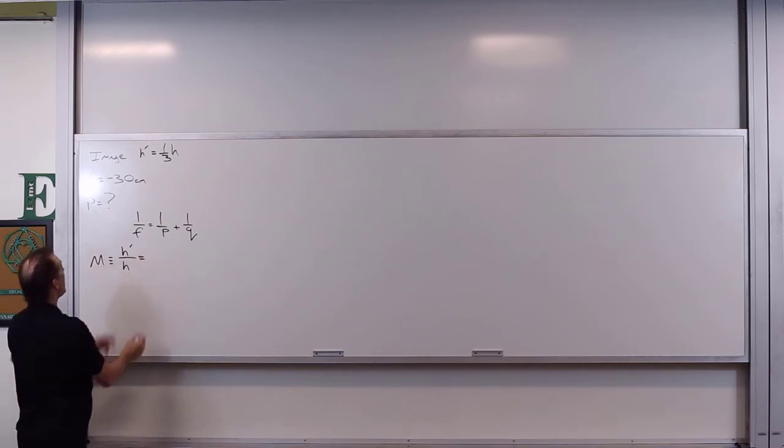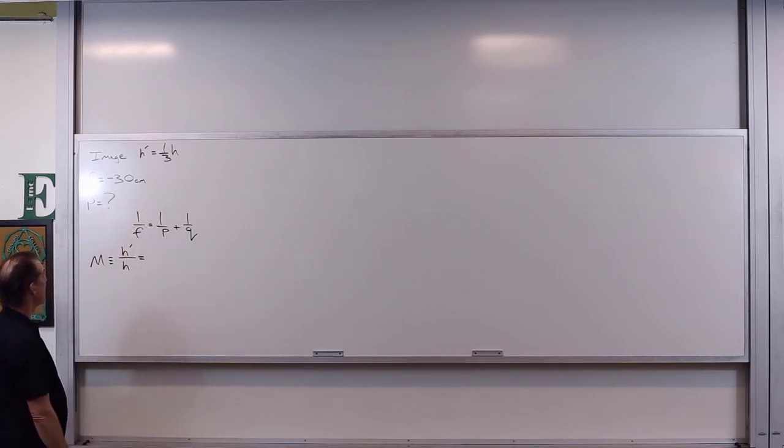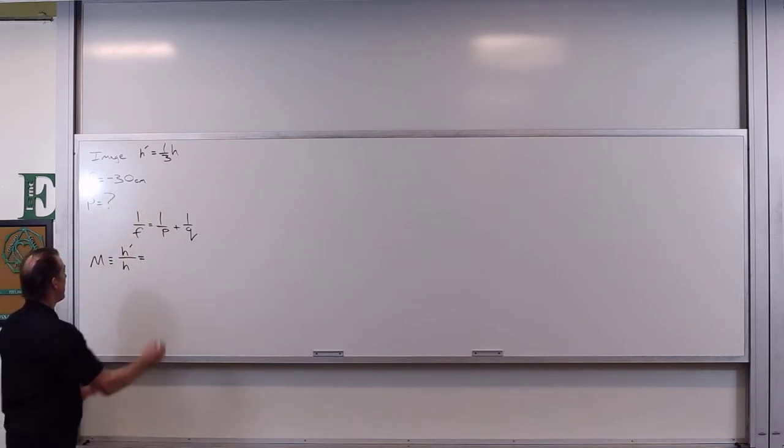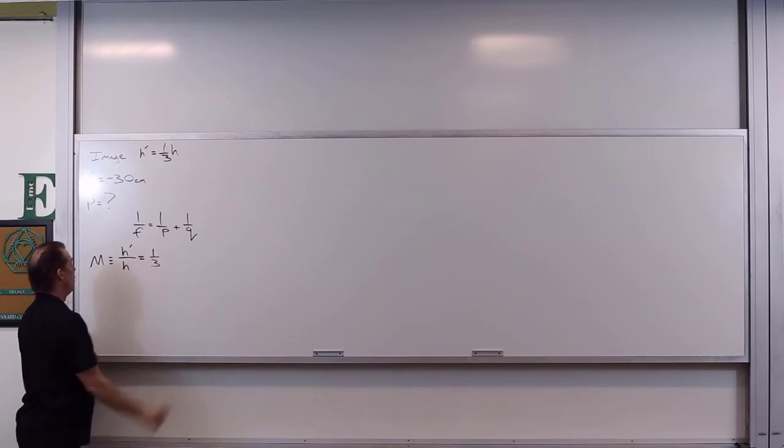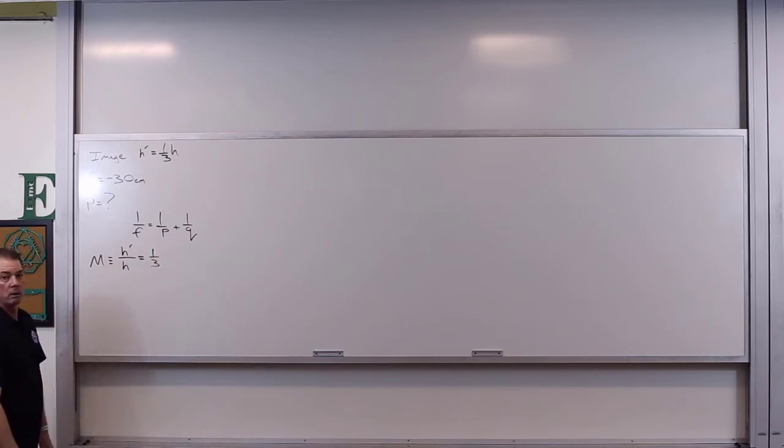Which in this case, if h prime is equal to one third h, we've got one third h divided by h. It would then be equal to one third. Could it possibly be inverted? And the answer is definitely not.